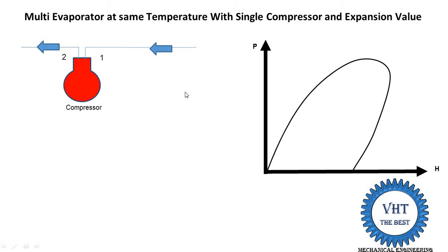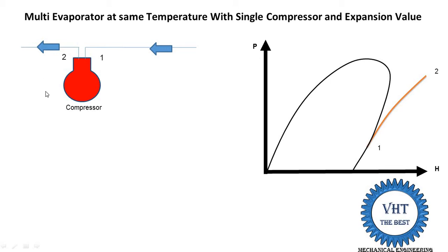Point number one is the saturated vapor at low pressure, so point 1 is on the vapor line at the bottom region. Point number two — pressure is increased, so point 2 moves upward; temperature is increased so enthalpy is also increased, but entropy remains constant. The constant entropy line on the P-h diagram is drawn as a curve, so this is our point number 2.